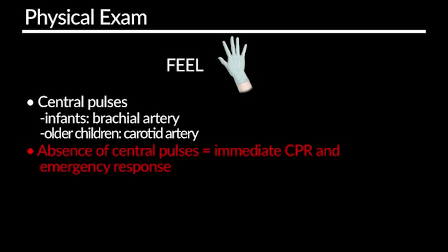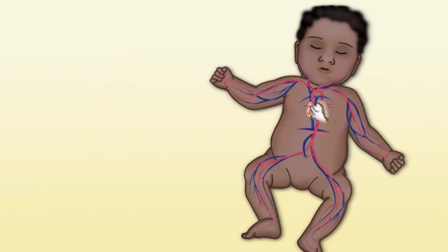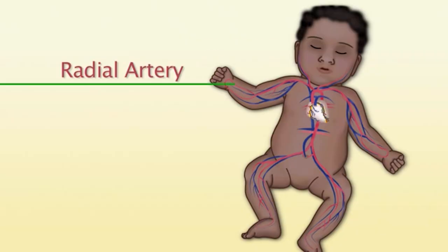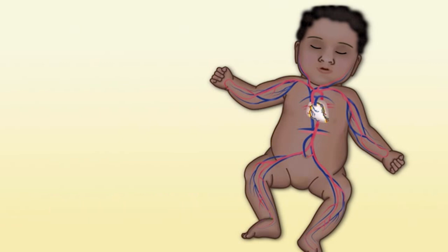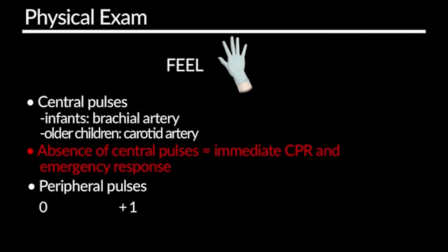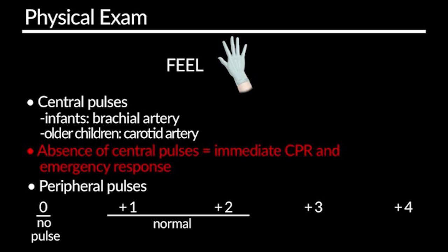Aside from assessing for central pulses, you'll also want to feel the child's peripheral pulses. You can palpate these in their radial artery, which can be found in their wrists — you'll want to compare both sides. You can also feel their feet, including the dorsalis pedis and the posterior tibial pulses. It is important to know whether these pulses are strong, normal, weak, or thready — graded on a zero to plus-four basis. Zero would be the absence of the pulse, and three to four we consider bounding. While a bounding pulse might seem like a good thing, it could actually be indicating a hyperdynamic state in your patient, which may be indicative of something called warm shock.